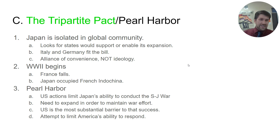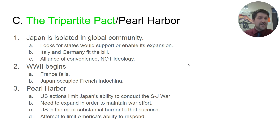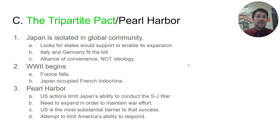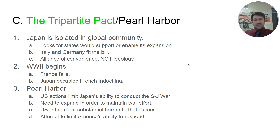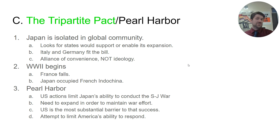World War Two begins in 1939. France falls. When France falls, Japan seizes Indochina — which is modern-day Vietnam, Laos, and Cambodia. And that decision, more than anything, is the nail in the coffin of U.S.-Japanese relations.